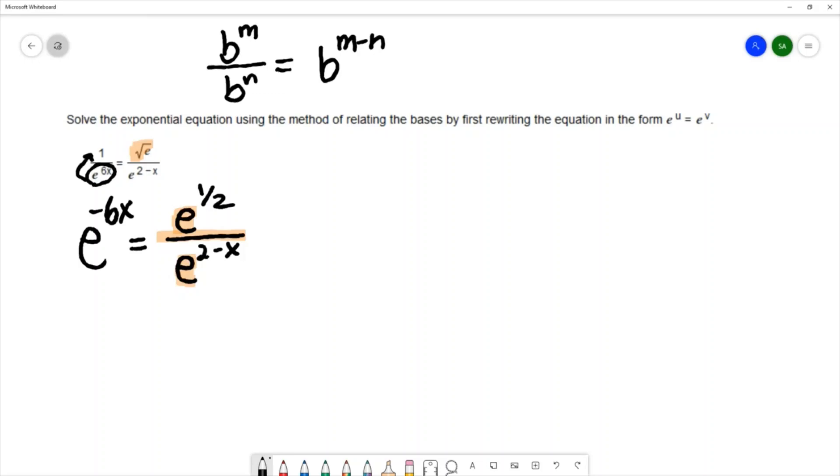So that's what we'll do on the right. We have e to the negative 6x equals e to the one half minus - we need to make sure we subtract the whole exponent so I'm putting parentheses around that exponent.